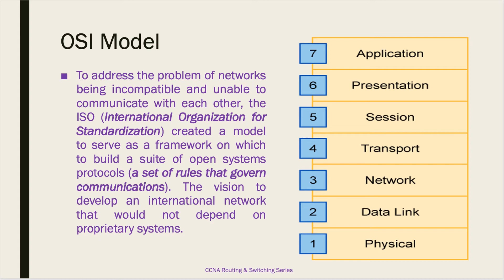Last but not least is the application layer. This layer is the closest to the human or the user — it's the application layer we interact with. When you go to your browser, you're using layer 7 or the application layer. This layer provides network services to applications like email, file transfer, or simply browsing. The application layer establishes the availability of intended communication partners. These are the seven layers that make up the OSI model, a standard-based model designed to move away from proprietary vendor-locked systems.